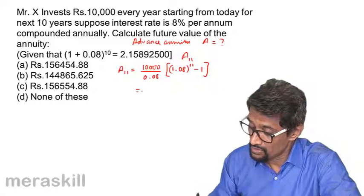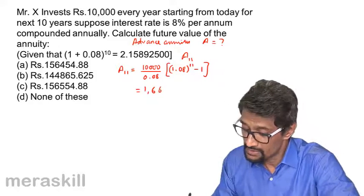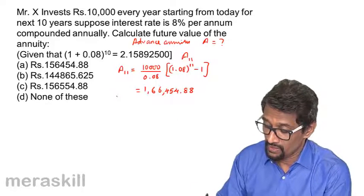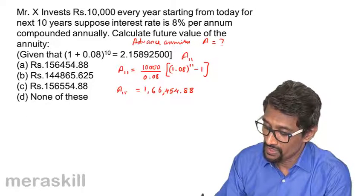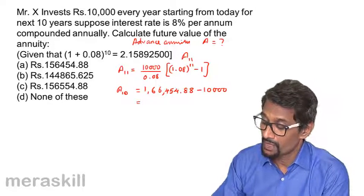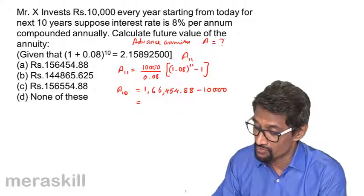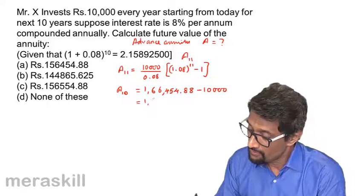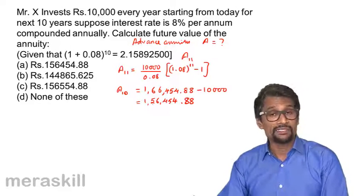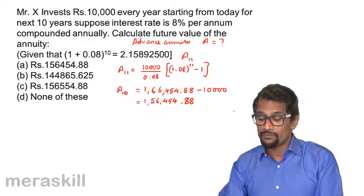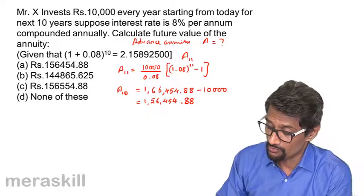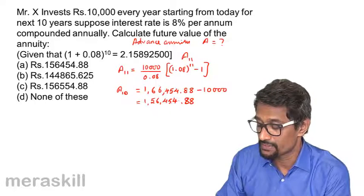This alone turns out to be 1,66,454.88. But this is a11, and a10 is going to be a11 minus the last installment — that is minus 10,000 — which turns out to be 1,56,454.88. So the future value of the annuity is 1,56,454.88.